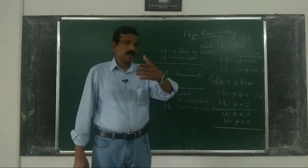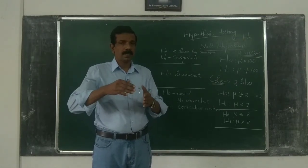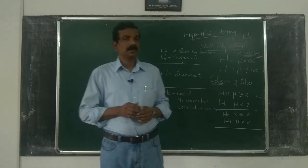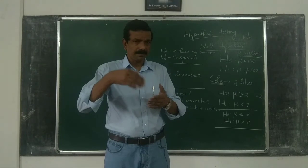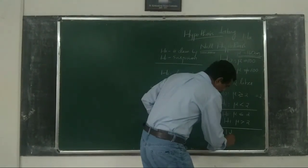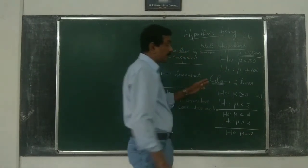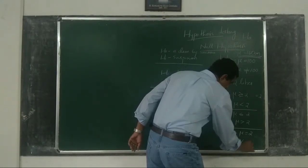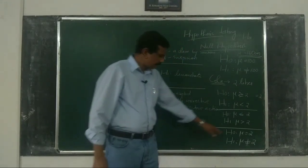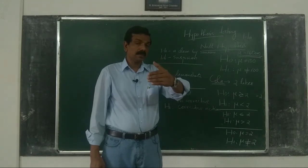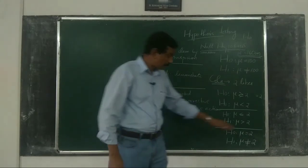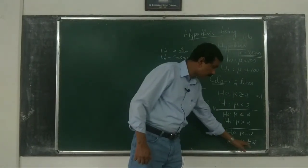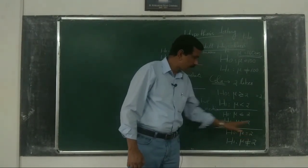There is a third perspective — that of the operator of the machine. From the machine operator's standpoint, the correct working of the machine is very important. So from the operator's perspective, we write H0: mu = 2 liters, and H1: mu ≠ 2 liters. If the machine is not equal to 2 liters — either more or less — corrective action is required.